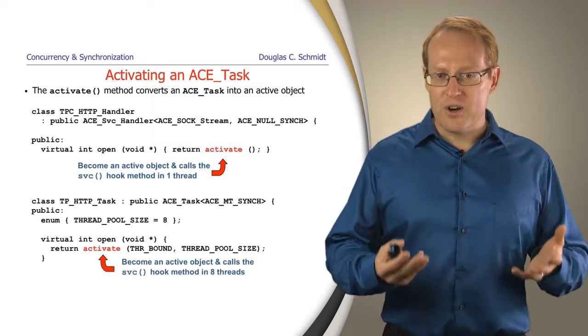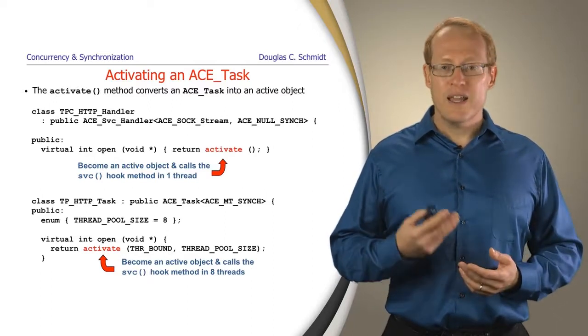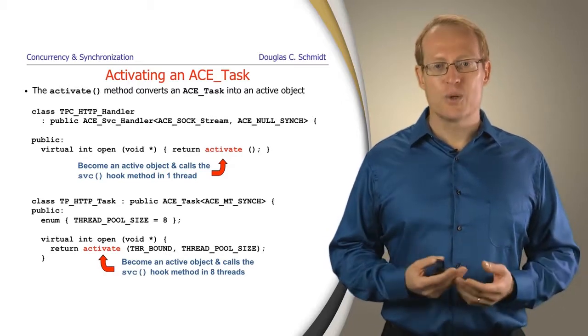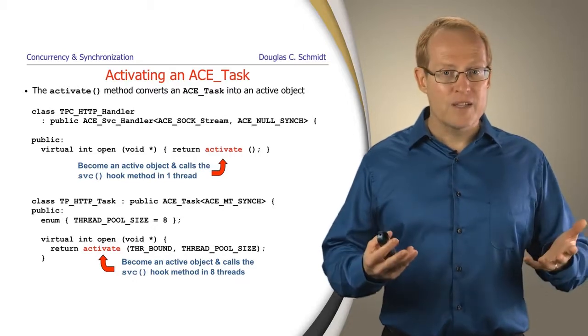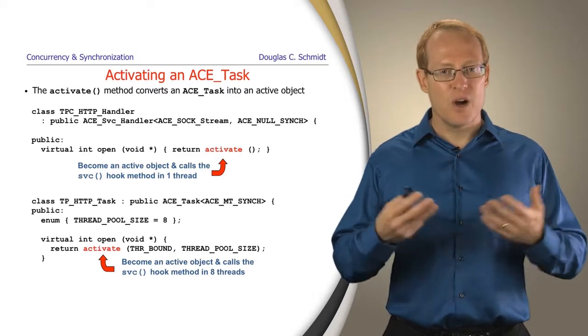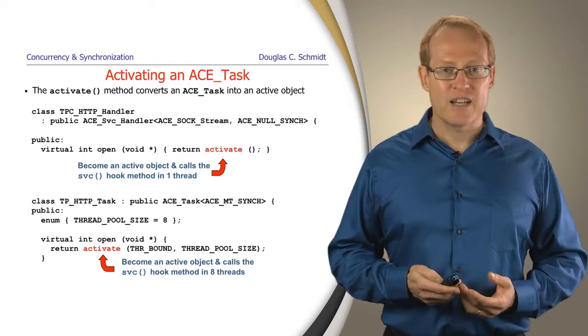Later, we'll also talk about another variant in our pattern language, the thread pool HTTP task, which will be part of the half-sync, half-async solution. In this case, we actually spawn a pool of threads, perhaps eight threads, which we can also use through activate. So activate gives us tremendous flexibility to spawn different numbers of threads that will run in the background in an active object.